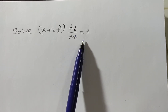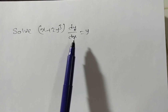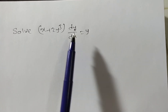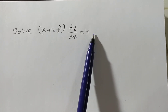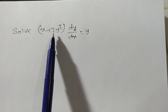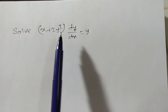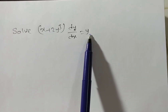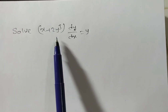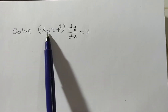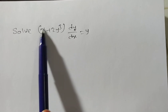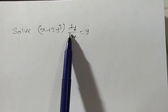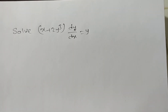We have a first method: variables are separable. Here, if you take dx to the right side, then the dy coefficient should be y terms and the dx coefficient should be x terms. But here, if you take dx to the right side, this is a function of both x and y, so you cannot separate the variables. We cannot apply the variables separable method in this case.